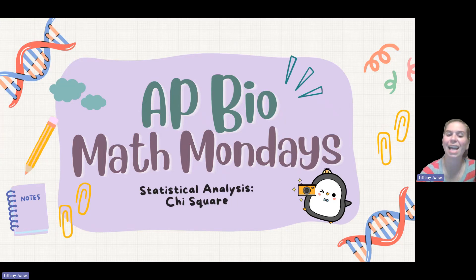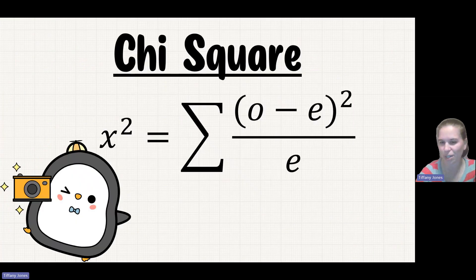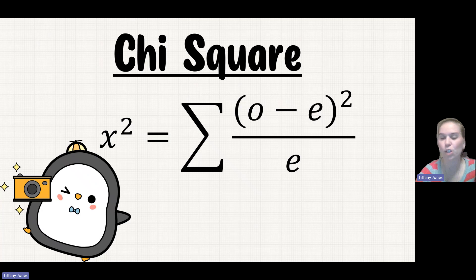Today we're going to look at statistical analysis, specifically a chi-square. So here's our equation. We're going to do the observed minus the expected, squared over the expected, and then we're going to do the summation of all of our different values.